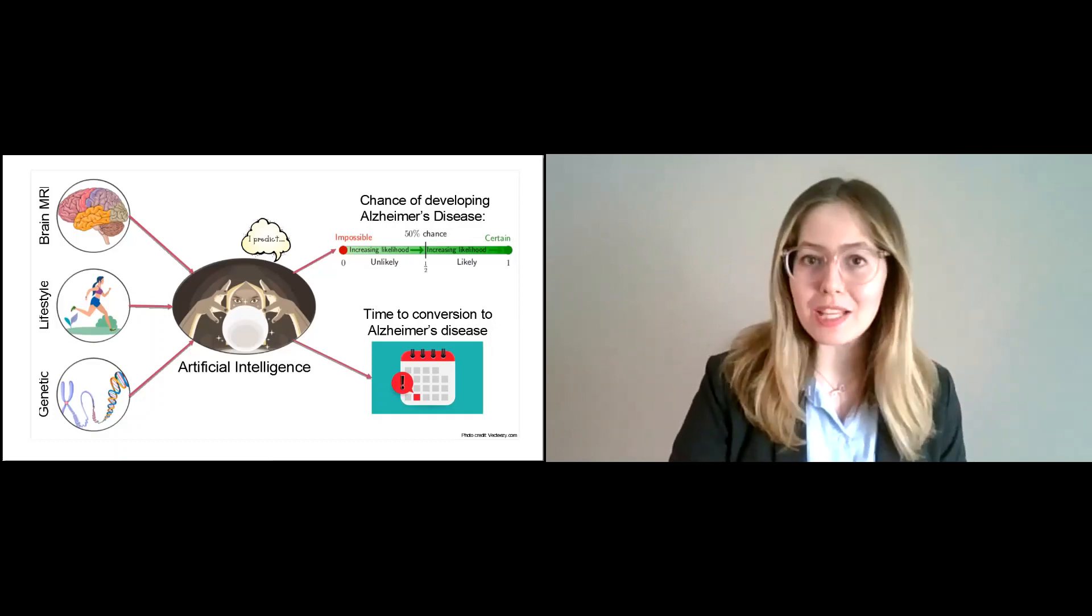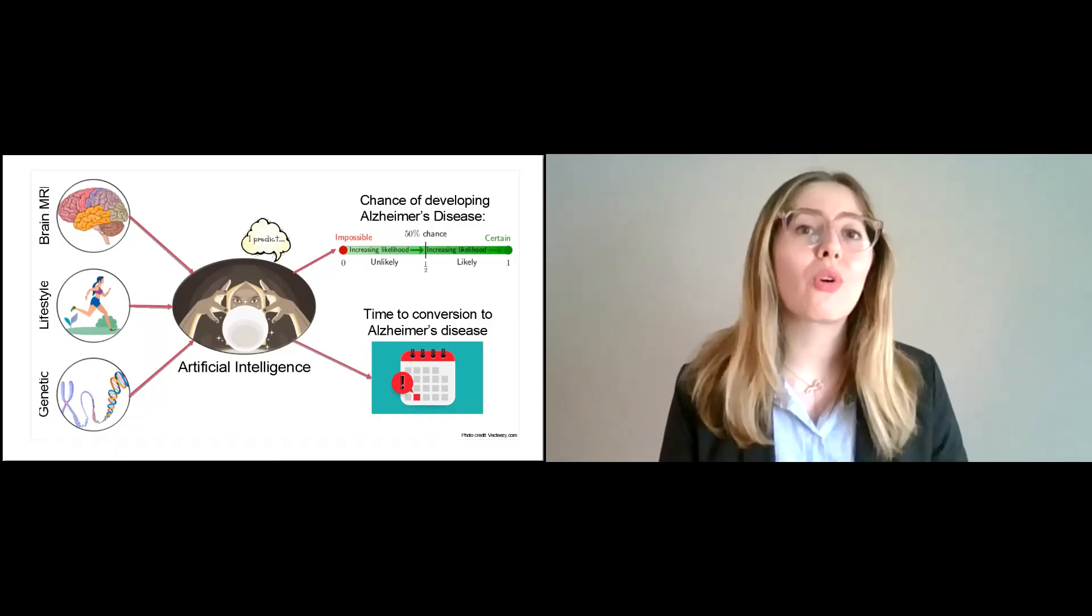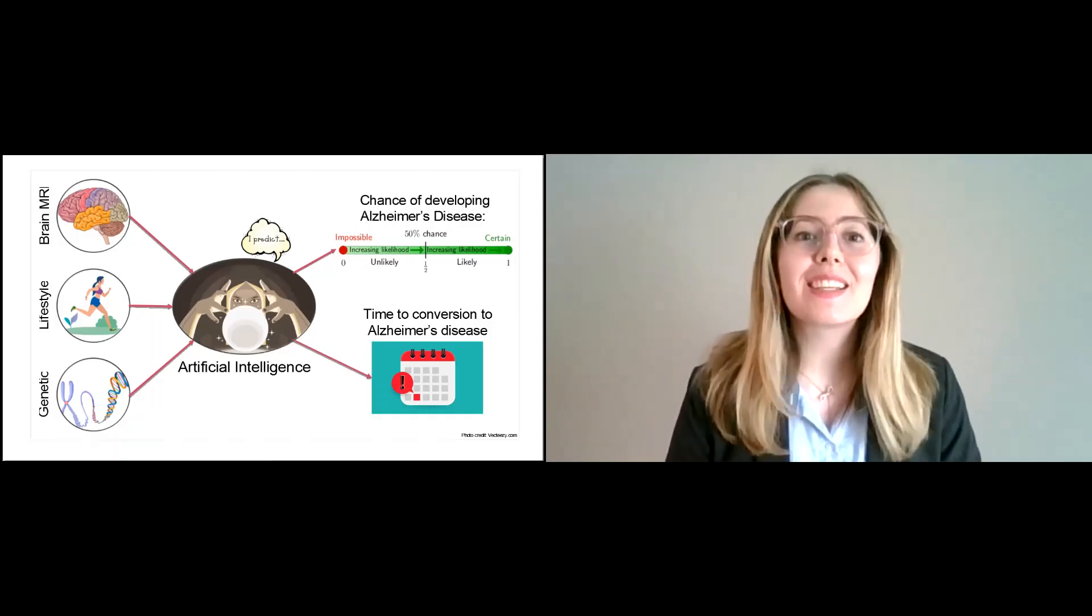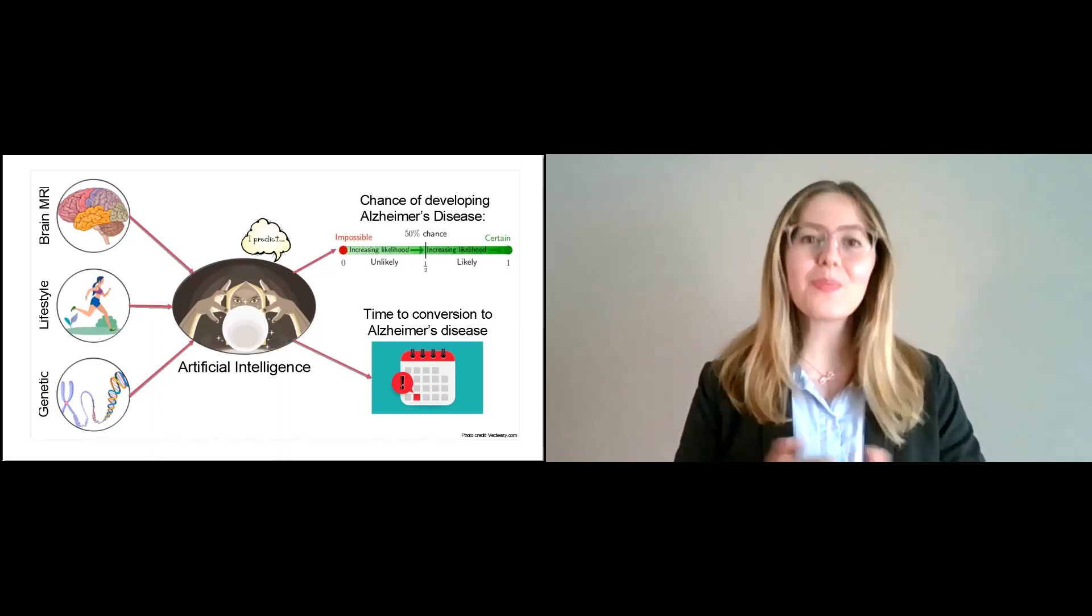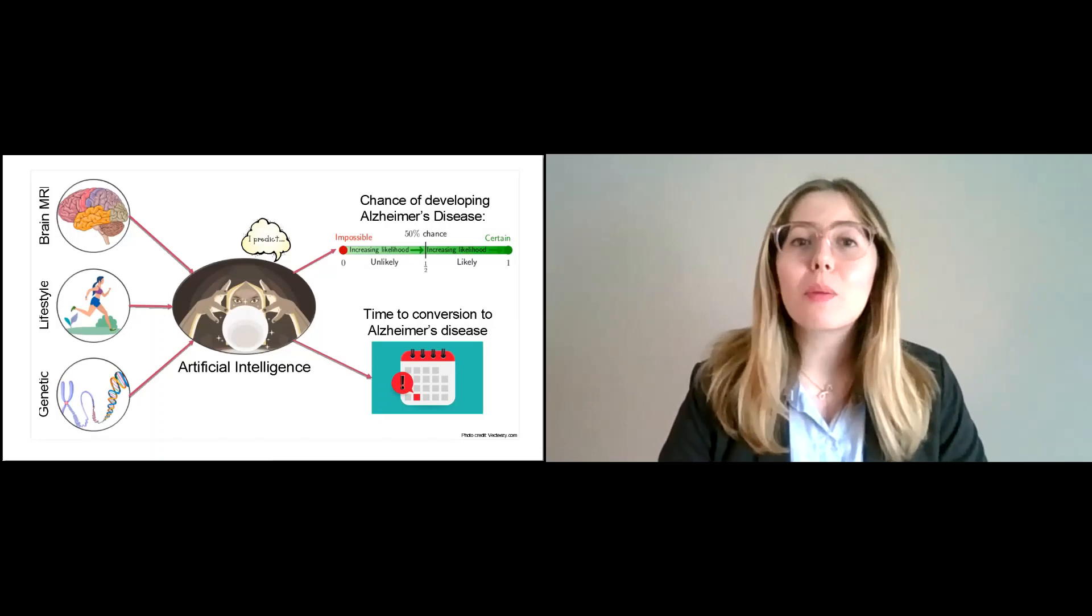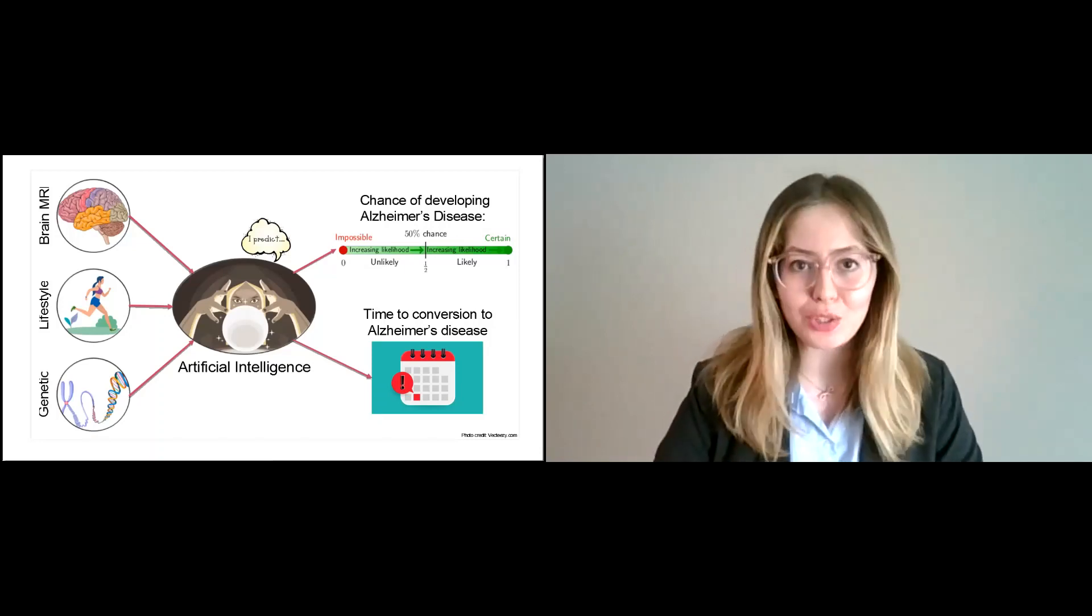Fortunately, there are some things that can be done. For example, we can try to predict the disease before it actually happens. And this is exactly what I'm doing in my master's thesis. I use Artificial Intelligence, this smart machine that has the ability to learn information the way that humans cannot.